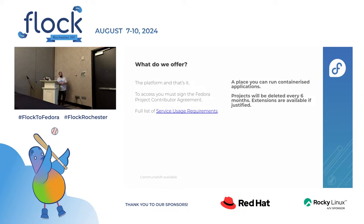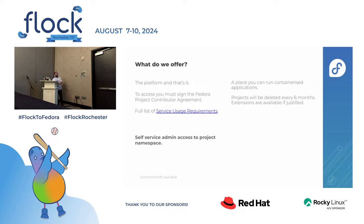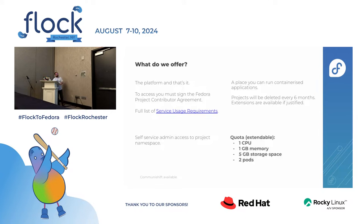You just need to justify your case — what it is and why you want to do it. You'll have full self-service admin to your project namespace and full control over who else has access. We give you access to a FAS group, and you can add or remove people in that group and it's automatically synchronized into the cluster. The default quota is pretty low — one full CPU, one gig of memory, five gig of storage, and two pods — but it's completely extensible. If you need more resources, just ask and we can increase them to suit your needs.